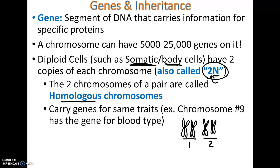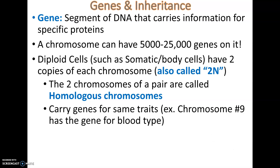Homologous chromosomes have the same bands and carry genes for the same traits, but that doesn't mean they're exactly identical. For example, chromosome number nine carries the genes for blood type, but both copies don't necessarily carry the same blood type. One of my parents was blood type A and the other was blood type O, so one of my chromosome 9s carries the code for blood type A and the other carries the code for blood type O. They carry information about the same traits but typically do not carry the exact same DNA sequences.